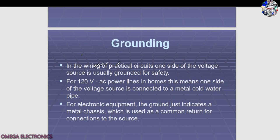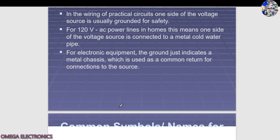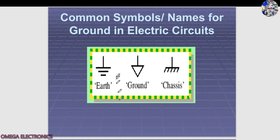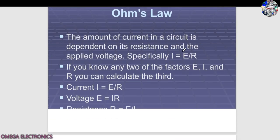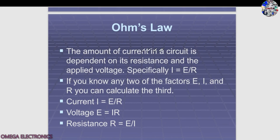Grounding: in wiring practical circuits, one side of the voltage source is usually grounded for safety. For 120-volt AC power lines, one side is connected to a metal cold water pipe. For electronic equipment, the ground indicates a metal chassis used as a common return connection to the source. Common symbols for ground in electric circuits include earth ground and chassis ground.